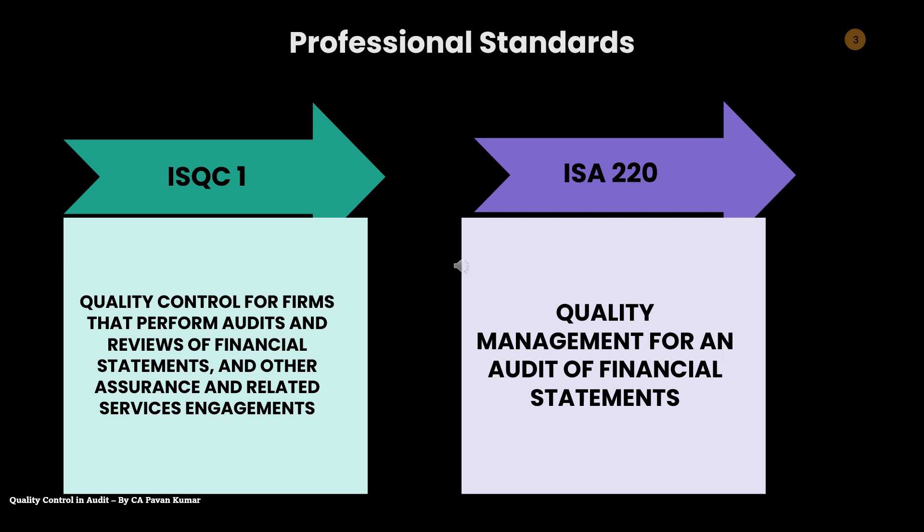When we speak about quality control in audit, we look at the professional standards issued by the International Auditing and Assurance Standards Board, or any domestic regulatory body — for example, in India, the Institute of Chartered Accountants of India. There are two standards issued with regard to quality control in audit. The first one is SQC 1 — in India we call it SQC 1, globally they call it ISQC 1, where ISQC stands for International Standard on Quality Control. The other one is International Standard on Auditing 220, or ISA 220.